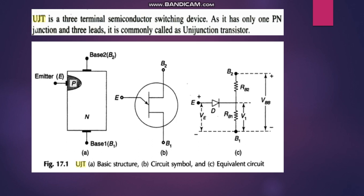We will cover the basic structure, symbol, equivalent circuit diagram of the UJT. The device has a heavily doped P-type semiconductor and a lightly doped N-type semiconductor. The UJT is generally used for switching purposes, oscillator purposes, and motor control — not for amplification.